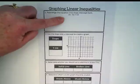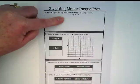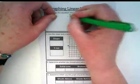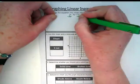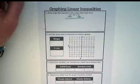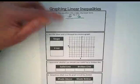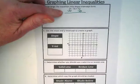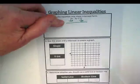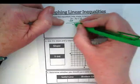What do we need to move first? The 2x. It's a positive 2x, so we're going to subtract it from both sides of the inequality. What's left on the left side of our inequality? Negative 3y. Be careful not to lose those negatives.